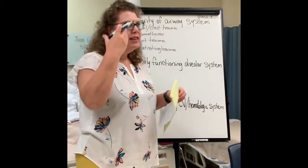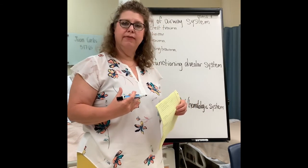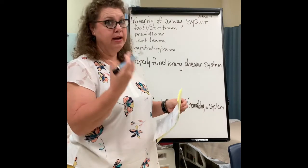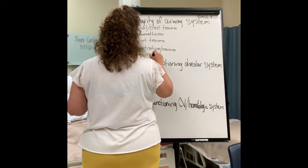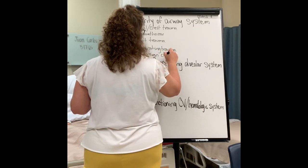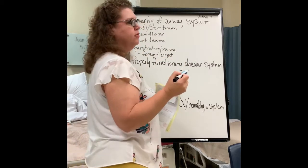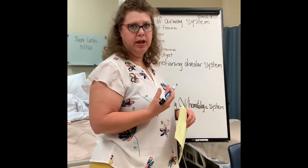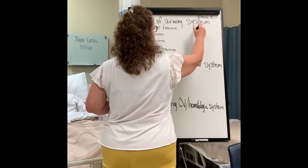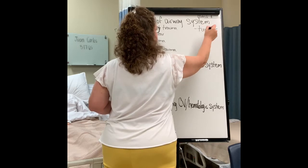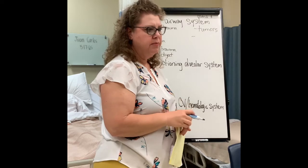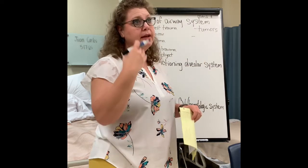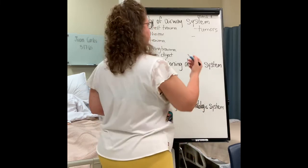If a client has anything in their airway, that is going to affect the integrity of the airway system. What could actually be in the airway that's not supposed to be there? A foreign object — if somebody's choking. Sometimes certain types of cancers cause the client to develop tumors in the airway system, which also affects airway integrity. Another thing that chronic illnesses can cause is an increase in respiratory secretions — that buildup of secretions can affect the integrity of the airway.